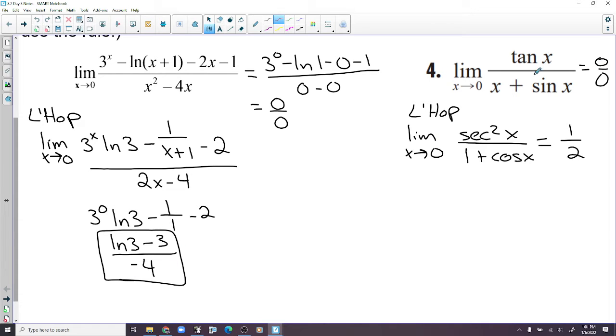Tangent of 0 is 0, 0 plus sine of 0 is 0. So we've got secant squared over 1 plus cosine. Secant of 0 is 1 and cosine of 0 is 1. So you get 2 in the denominator there.